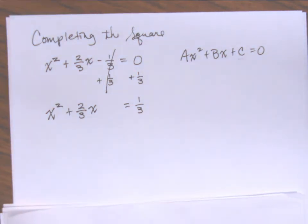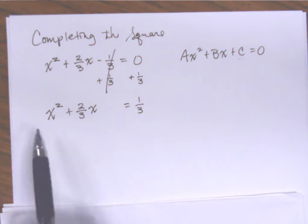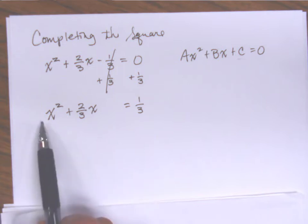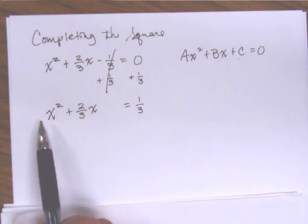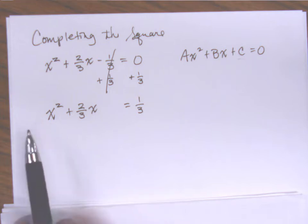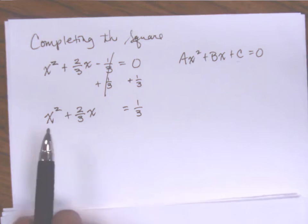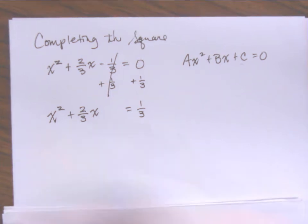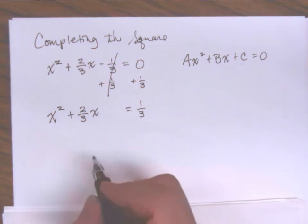Before I can do completing the square, I have to make sure my a — or my coefficient of x squared — is just one. And it is here, so we're going to go ahead and continue working.